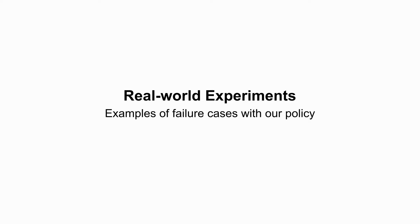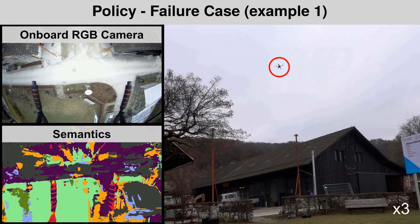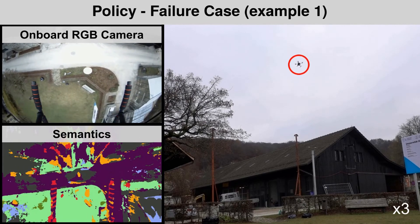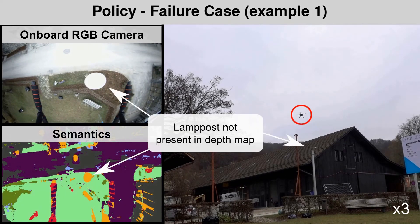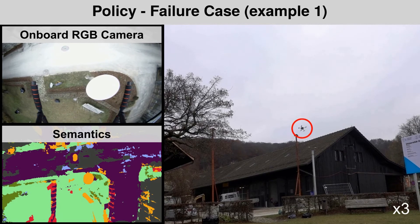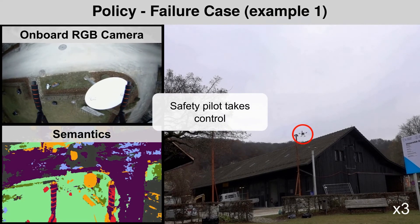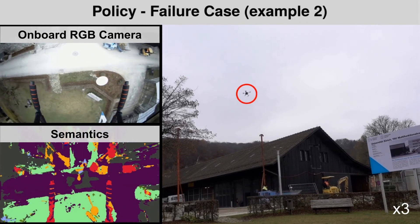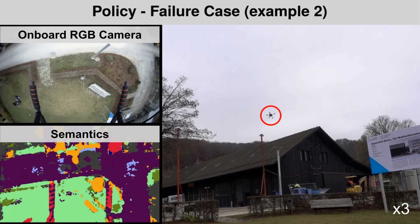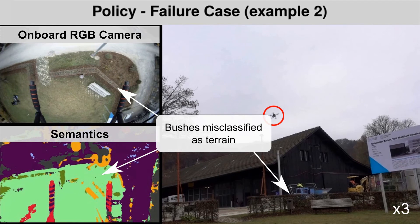During testing we also experienced failures with our policy. In this example, the UAV almost collides with a lamppost that was not captured in the depth map obtained by depth completion. In the second example, because of semantic misclassification, the UAV tries to land on bushes.